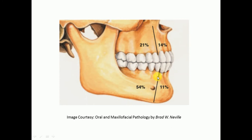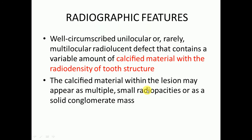They are most commonly present in the posterior part of the mandible. Regarding radiographic features, they are well-circumscribed unilocular or rarely multilocular radiolucent defects. They may be unilocular in most instances but can also be multilocular. The lesion contains a variable amount of calcified material with the radio densities of tooth structures.